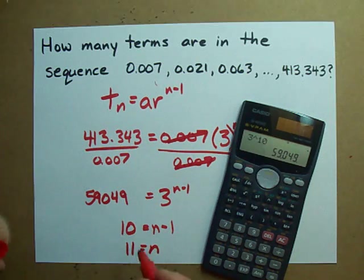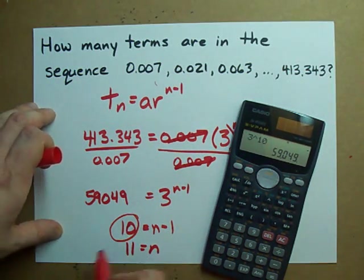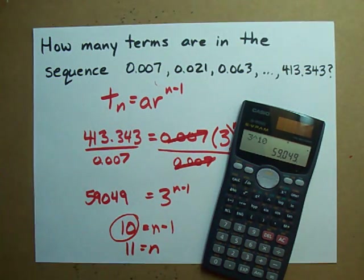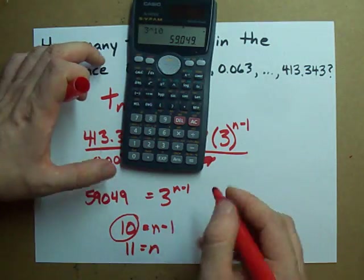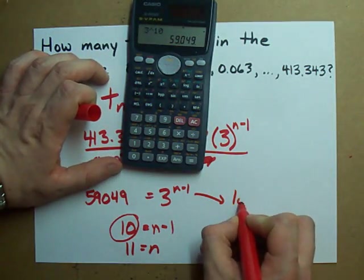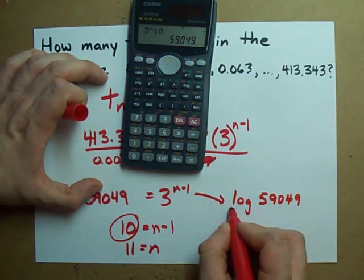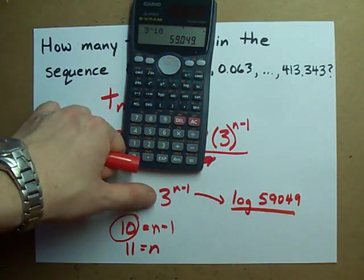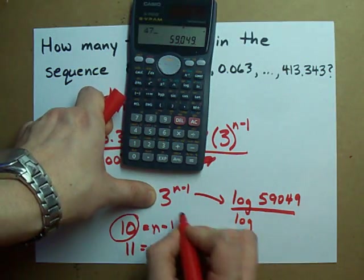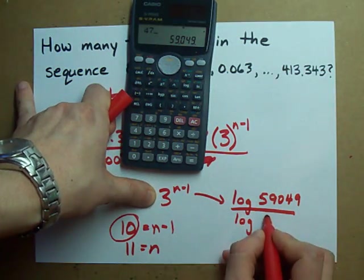But, I'm going to teach you a little trick. Rather than guessing and checking to get that 10, here's all you have to do. You just take the log of the number you're looking for. And log is a button on your calculator, even if you've never used it before.